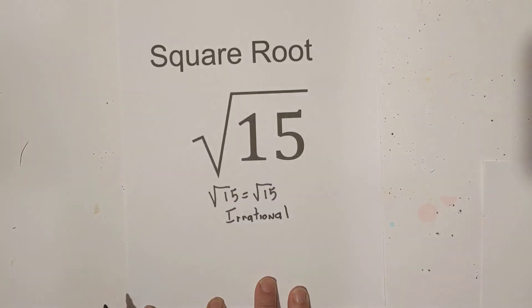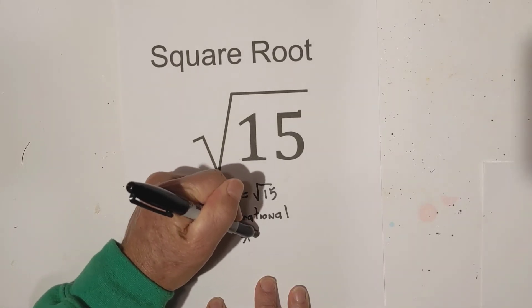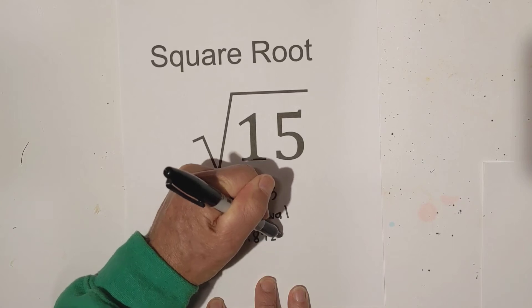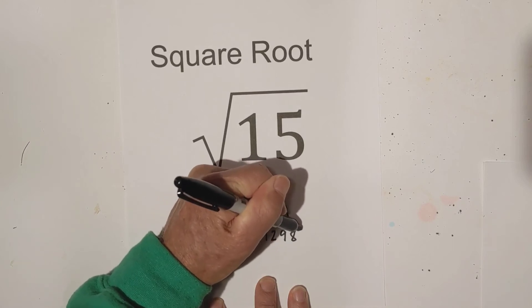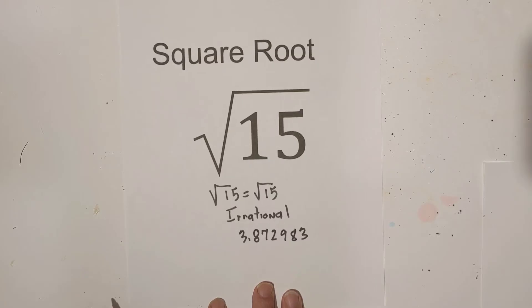And if you would like, you can estimate it in decimal form, and it would be 3.872983, and it's going to continue because it's irrational.